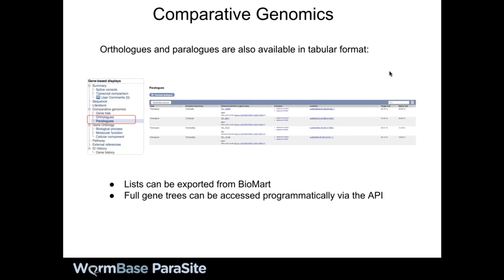This kind of browsing is useful if you're only interested in one or two genes. If you're interested in many more genes, then BioMart is probably the way to go. You can also get full gene trees programmatically via the API, but we're going to focus on BioMart for today.